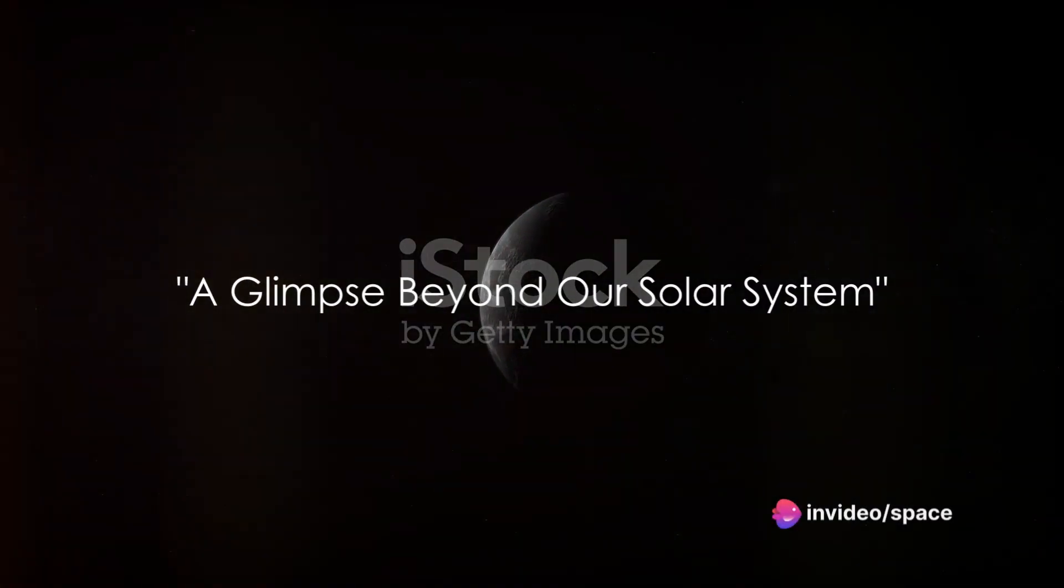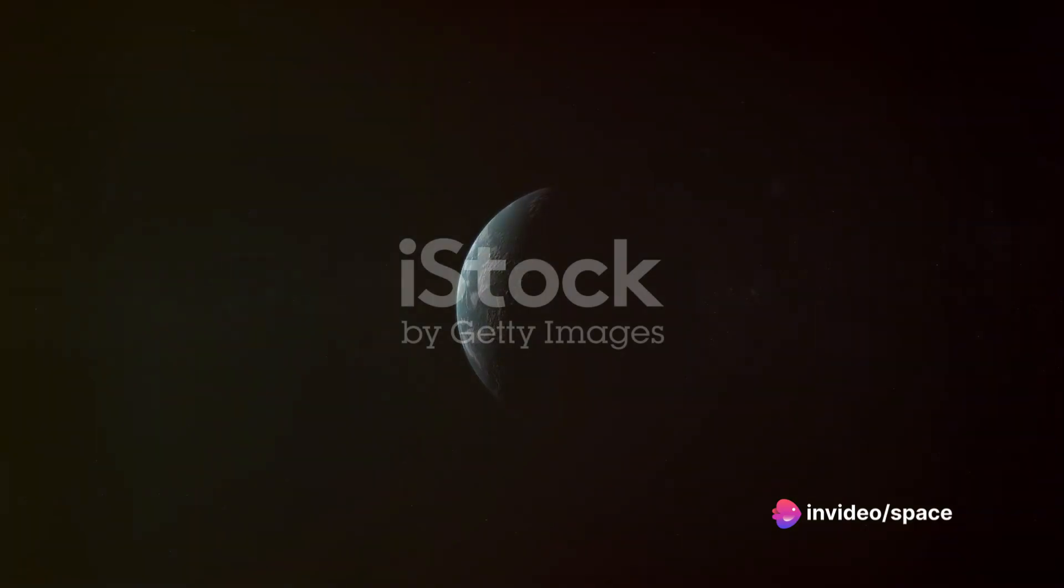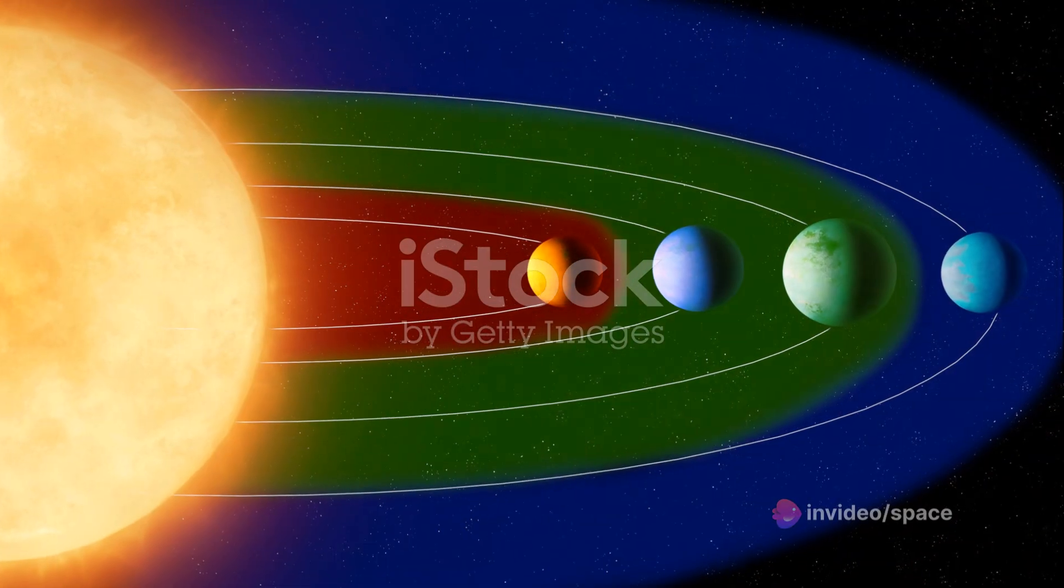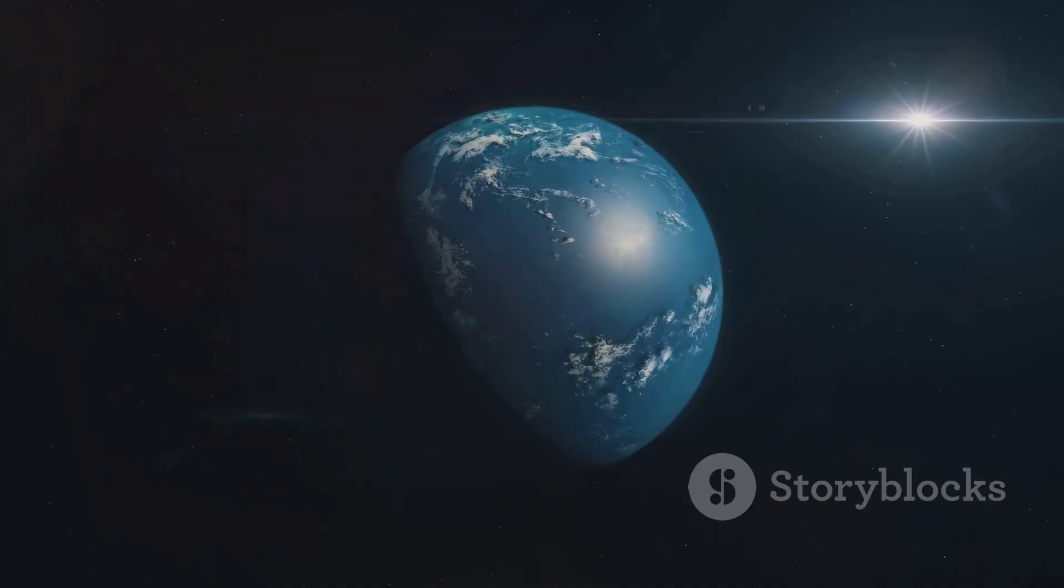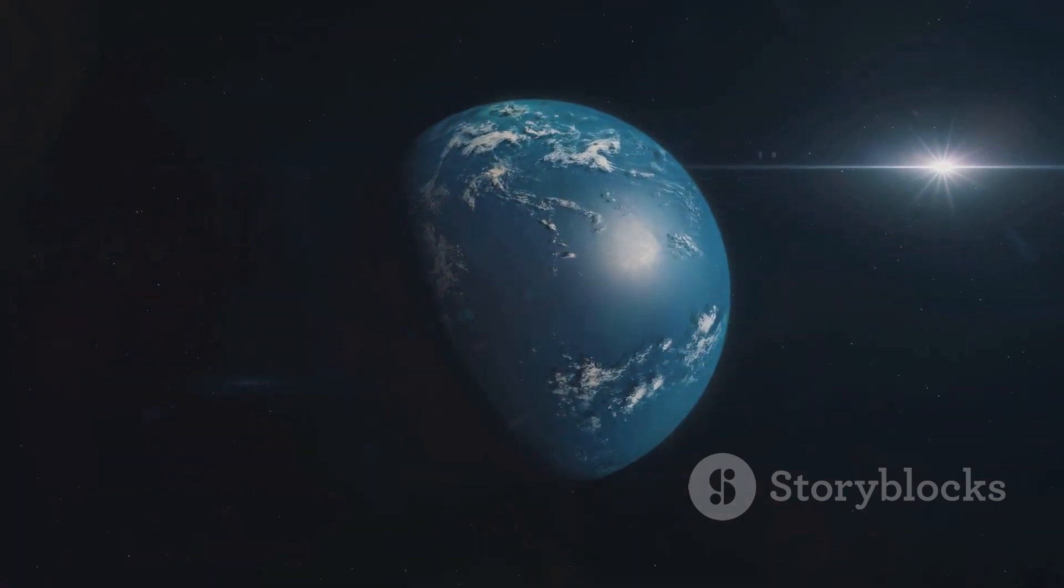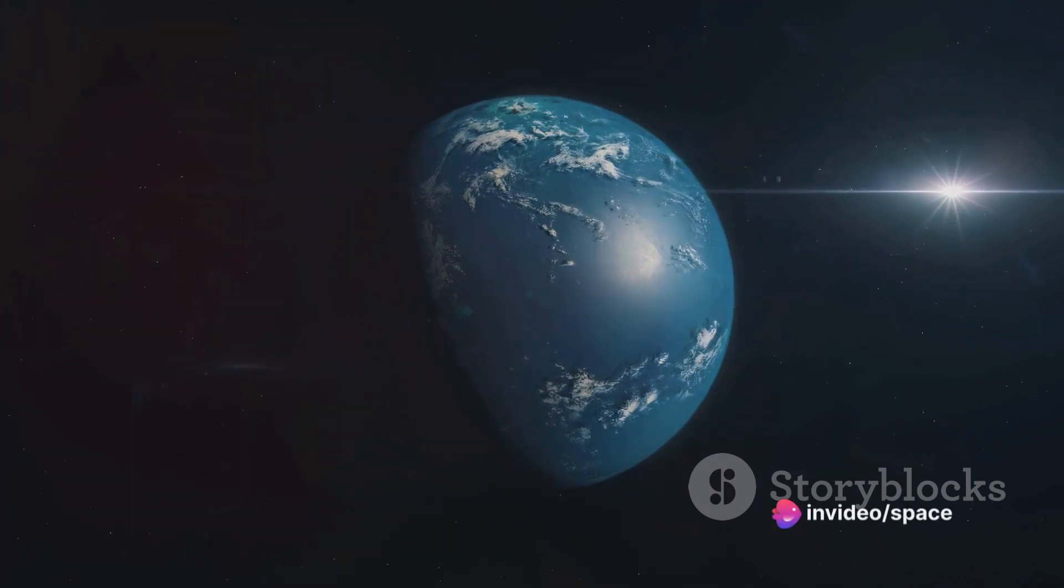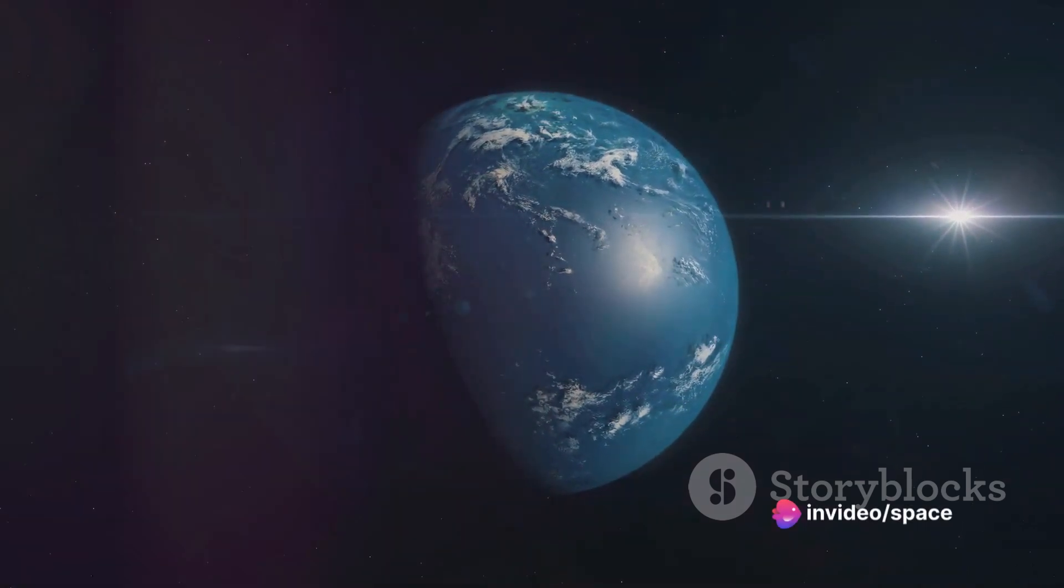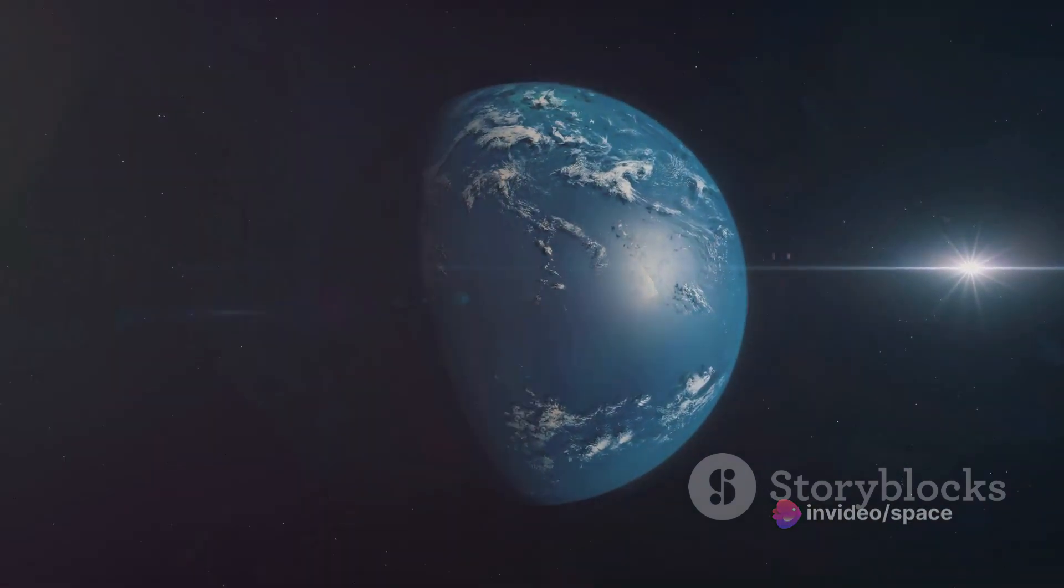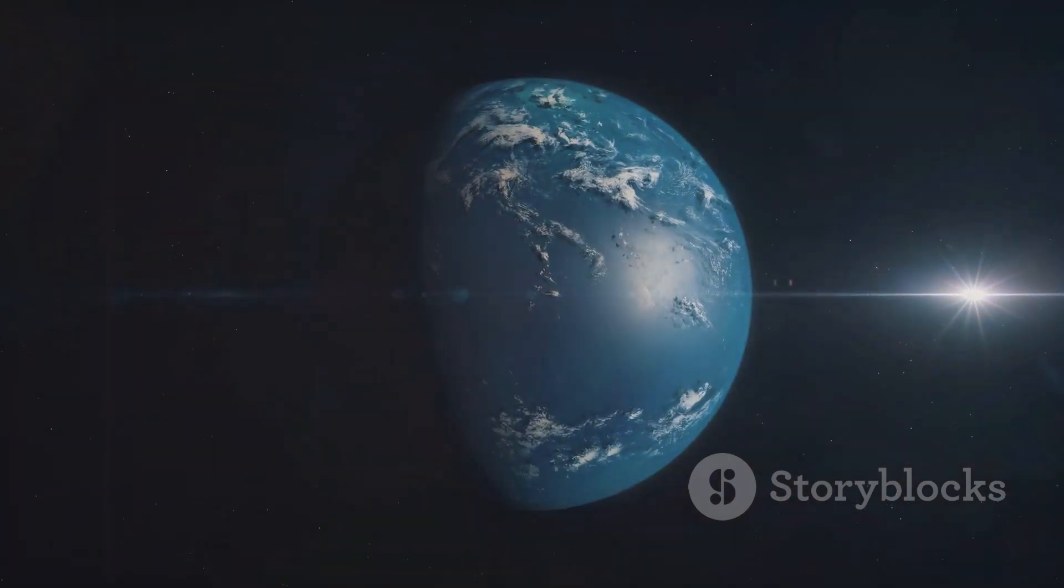Imagine a world 2.4 times the size of Earth, with a year that lasts 290 days. Welcome to Kepler-22b. Kepler-22b, a fascinating celestial body that stands out in the vast cosmos, is an exoplanet that has sparked curiosity and wonder since its discovery. Its large size and relatively short orbital period make it distinct, but what truly sets it apart is its potential for life.